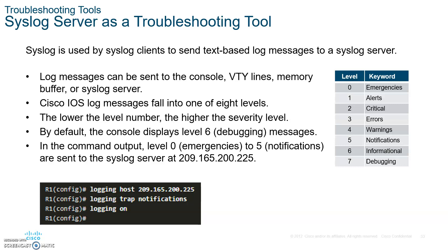The Syslog server can always be extremely helpful because it aggregates all the events that occur on the network. Please take a snapshot of this to know all the different levels of the Syslog server. This is how you set it up: if there is a server with this IP address, you type 'logging host' followed by the server's IP address. Then type 'logging trap notification' — levels 0 to 5 will be there — and 'logging on' to start sending logs.